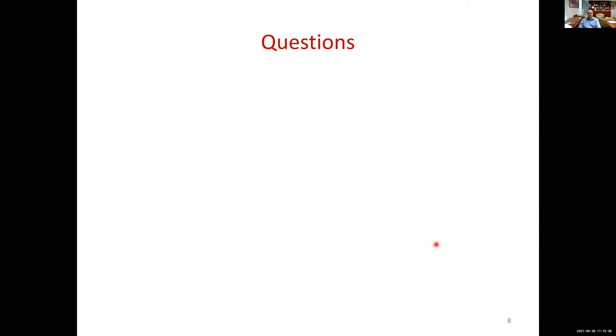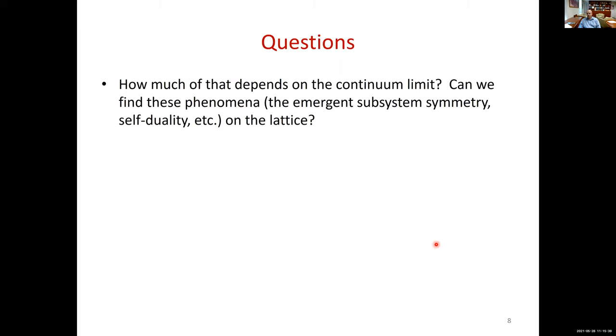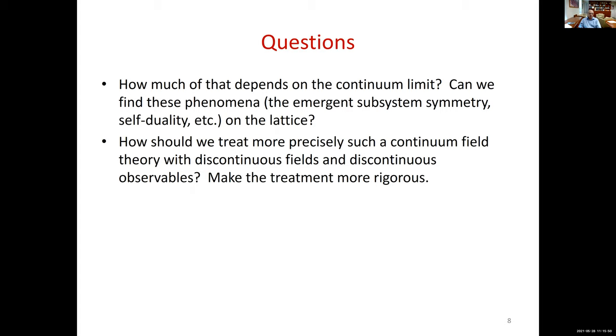This is my last slide. First of all, how much of what we said depends on the continuum? Can we analyze in similar ways other systems? How much can we find the lattice model with these properties? More generally, how should we treat more precisely such quantum field theories with discontinuous field configurations and discontinuous observables? We'd like to make the treatment more rigorous. So the answers to these questions will be in the two coming talks, and they are summarized in this recent paper. Thank you.